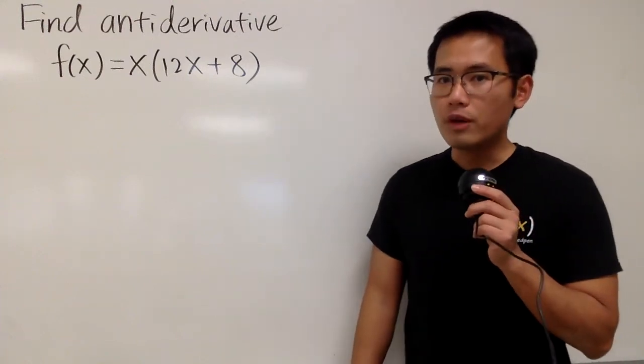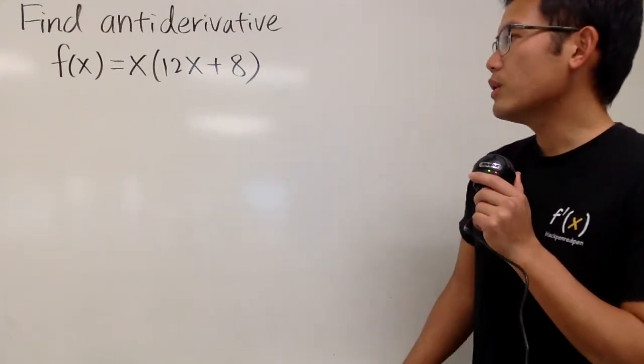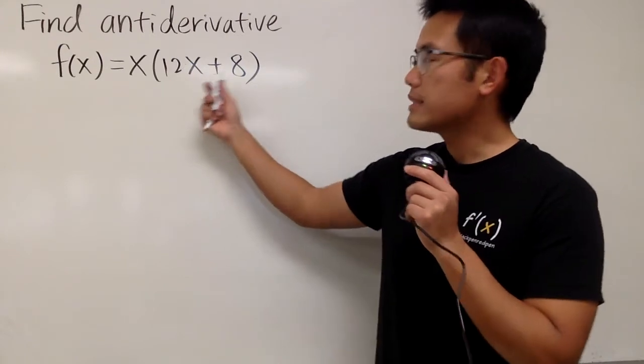Okay, we'll find the most general form of the antiderivative of this. So, we have x times 12x plus 8.